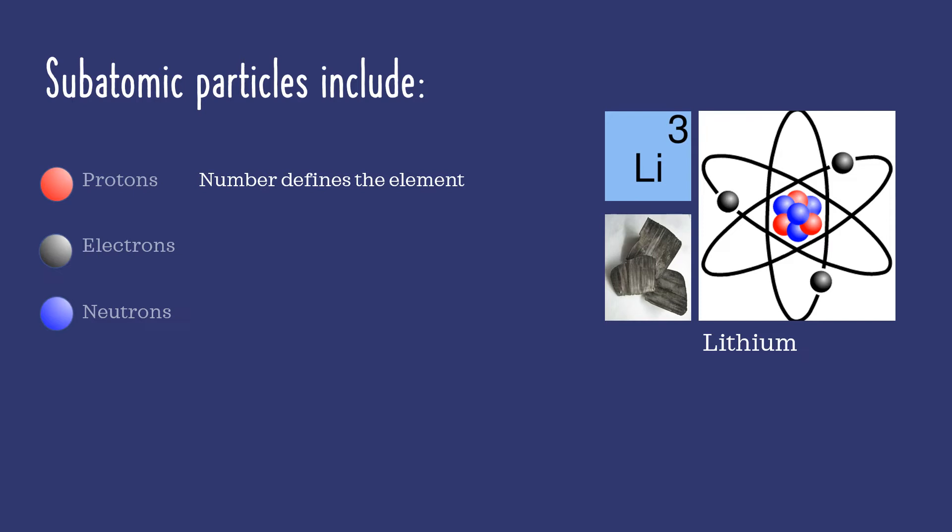The next subatomic particle is the electron. Electrons influence the atom's chemical reactivity or how that atom will combine with others to build larger chemical structures. Finally, neutrons contribute to the overall size or mass of the atom.